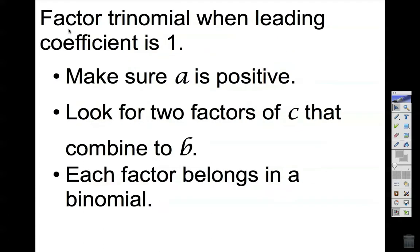Quick reminder on how to factor a trinomial when the leading coefficient is one. We want to make sure that a is positive to make things easier for us to factor, though it's not necessarily something you have to do. We're going to look for two factors of c — our constant — that combine to make b, which is our linear term. Once we find those two numbers that multiply to get c and combine to make b, those two factors are each going to belong in a binomial with their respective signs.